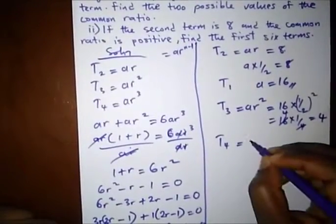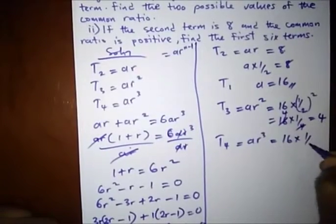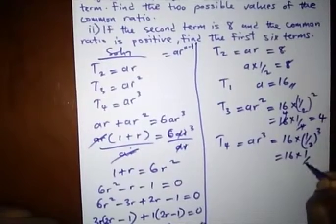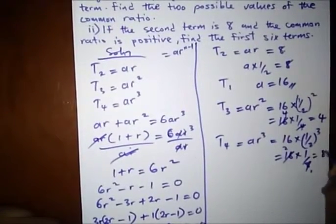What's our fourth term? AR cubed, which is 16 times 1 over 2 cubed, which is 16 times 1 over 8. Cancel, we have 2.